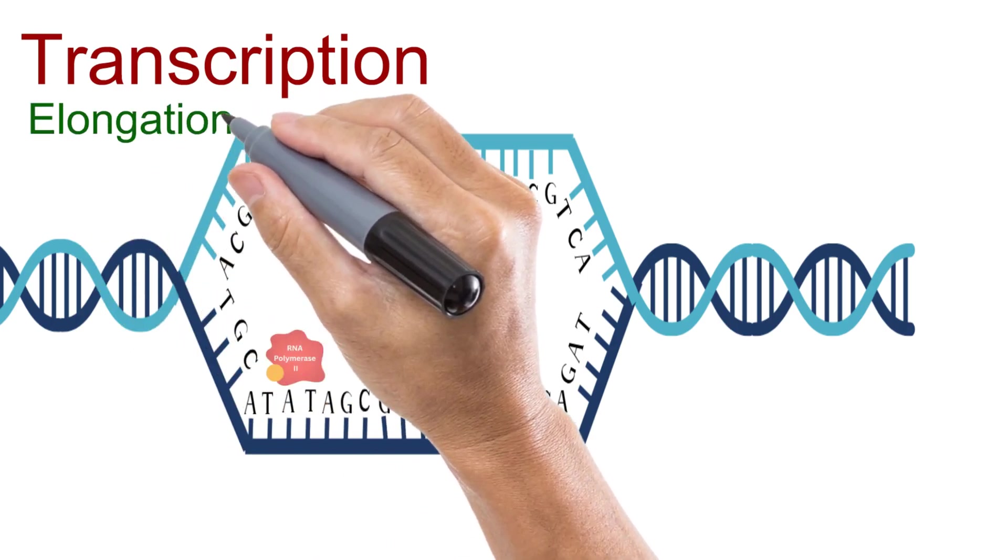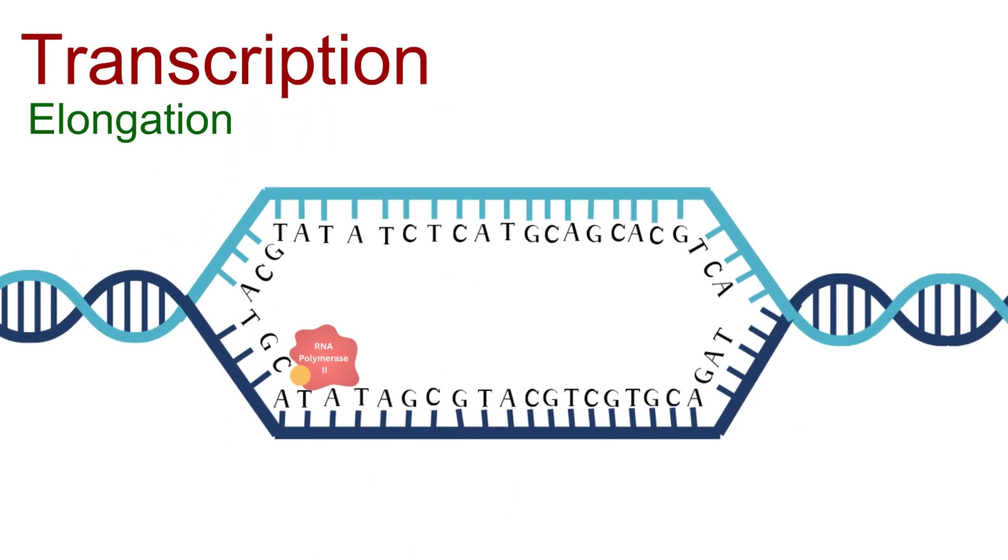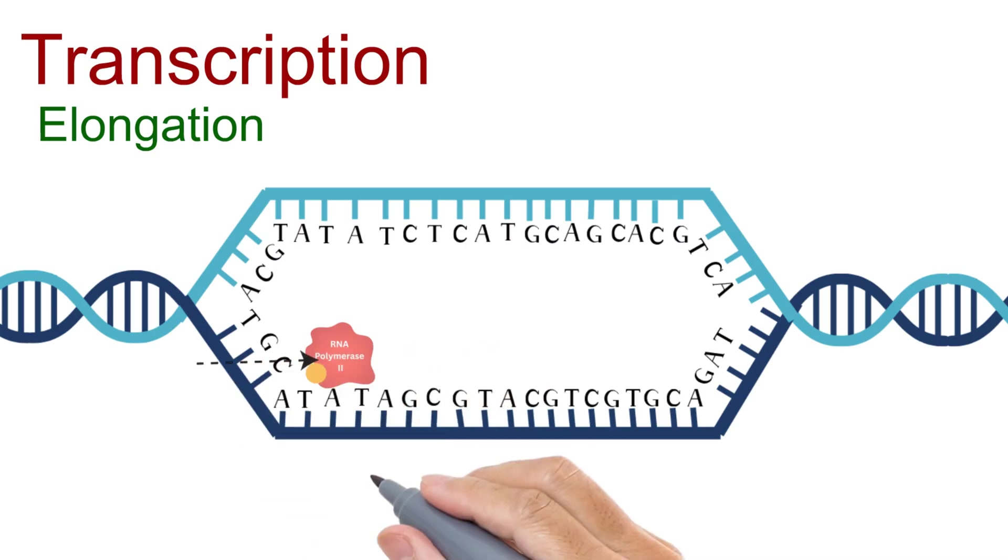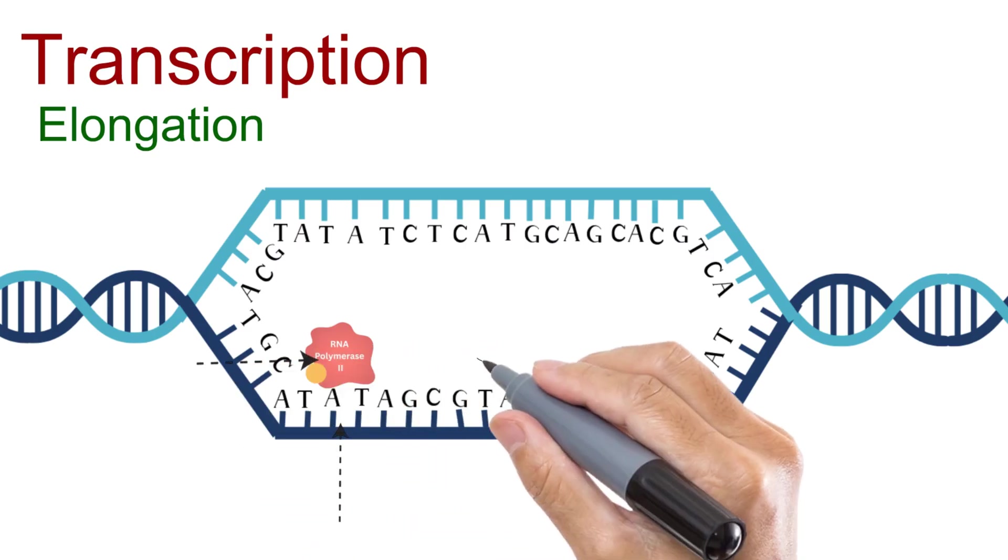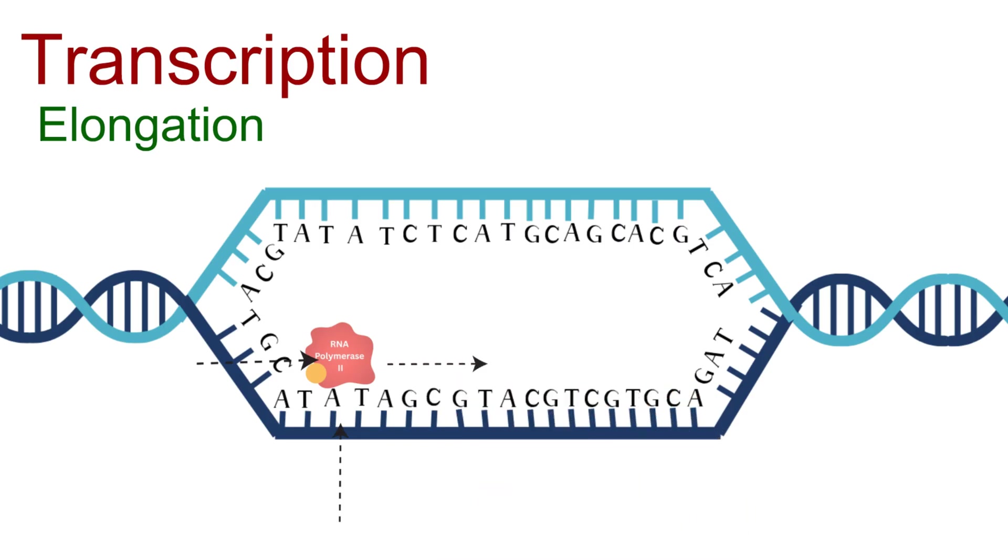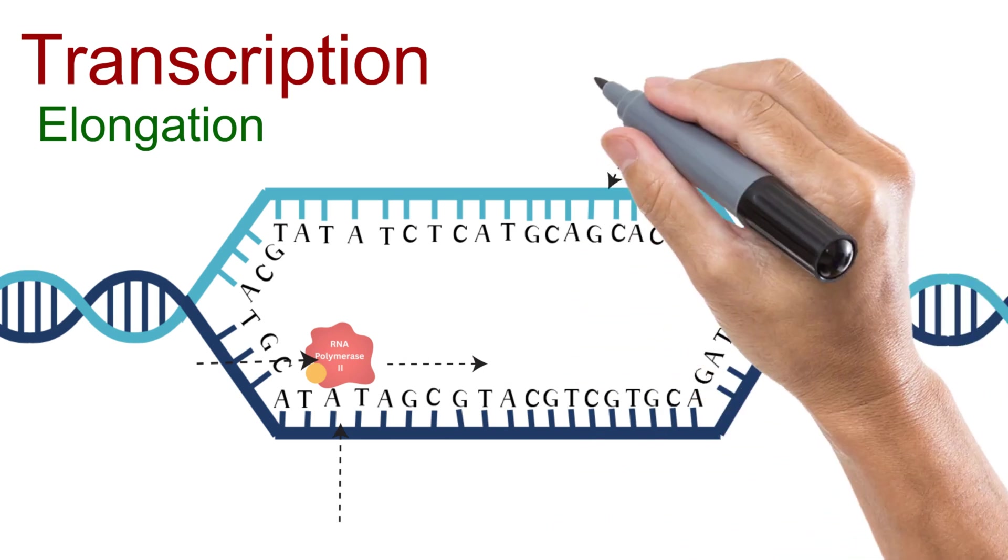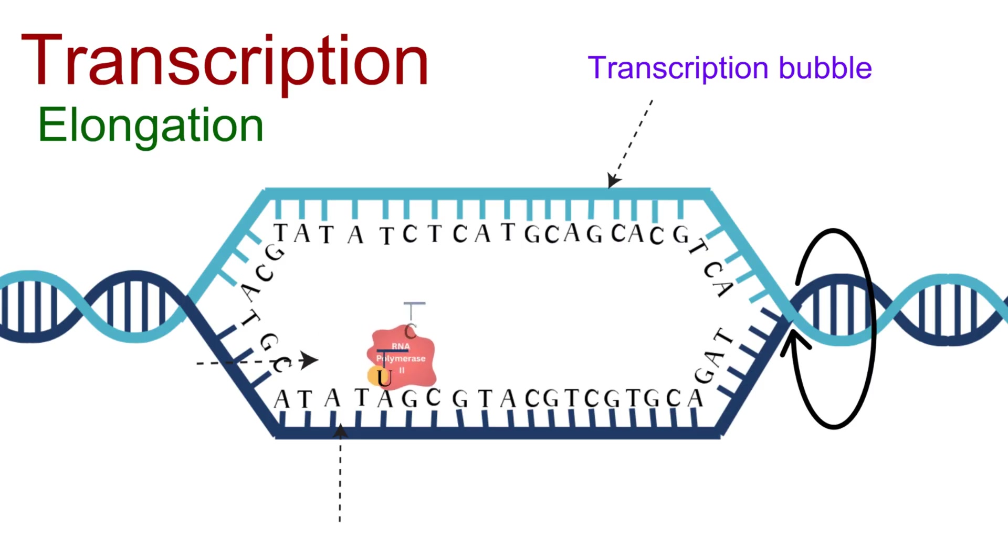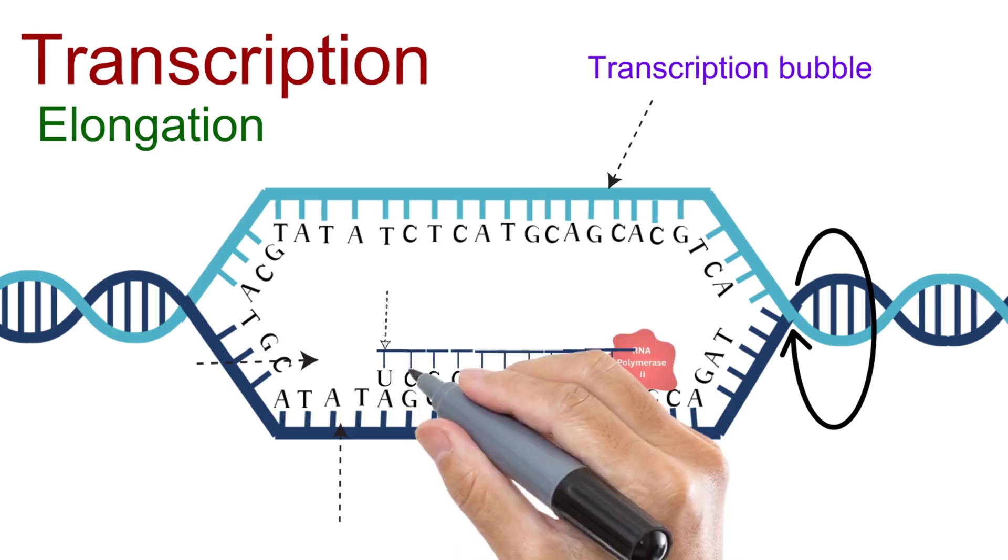Elongation, the second step of transcription. This is where the real action begins: the actual synthesis of mRNA. Once the transcription factors have done their job and correctly positioned RNA polymerase at the promoter, RNA polymerase moves forward along the template strand of DNA. Here's how it works: the DNA double helix unwinds just ahead of the polymerase, opening up a small transcription bubble. Inside this bubble, RNA polymerase reads the DNA template strand one base at a time. Complementary RNA nucleotides are added, forming the growing mRNA chain. But here's something important.